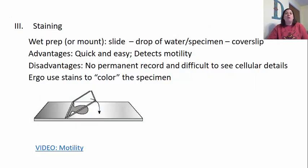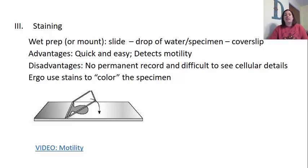When we want to see structures of an organism in detail, a lot of times we need to stain these organisms. Before we get to actual stain types, let's talk about what a wet prep or wet mount is. With a wet prep, you take the slide, put a droplet of water with the specimen, and cover it with a cover slip. You're not going to use any stain because stain can potentially kill organisms. When looking at a wet mount, we're looking at whether there is any mobility or motility to the organism. This is a quick and easy way to observe organisms and detect motility.